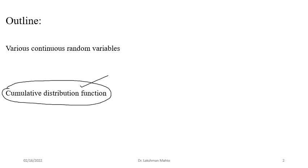In the last example, we saw a situation where we took a continuous random variable but once we define a function of that random variable in a different way, it may become discrete. For a discrete random variable, defining a function over it gives again a discrete random variable. But in the case of a continuous random variable, defining a function over it may be discrete or continuous, depending on what you are defining.